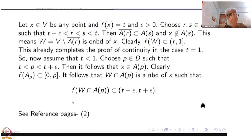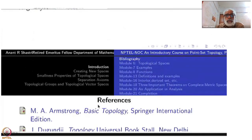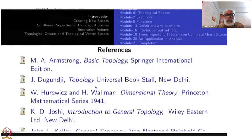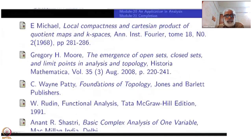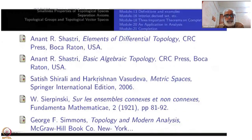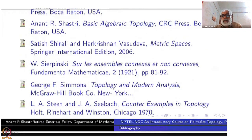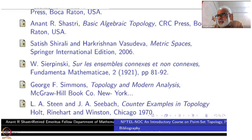That completes this part of the course. I just repeat the reference books. I was completely influenced as a student and even today by the book of Simmons (George Simmons), and in spirit I have followed this book. Note that definitions of T0, T1, normal space, T3, T4, etc. differ from Simmons' book — so be cautious about that.